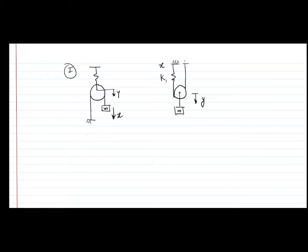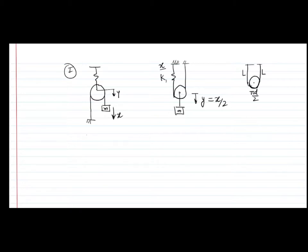Let's start with the second case. If I assume a certain change in length in this spring equal to X, what will happen? When the length increases, the center will go down, but it will go down by only half the amount of the change in length. To visualize this, consider a simple system with two ropes — assume the ropes are inextensible. This length is L on each side, and the periphery is pi*D/2, so the total length of the string is 2L plus pi*D/2.